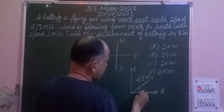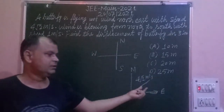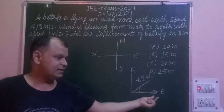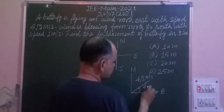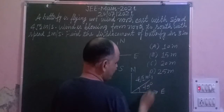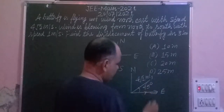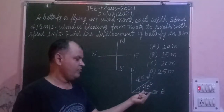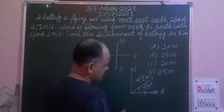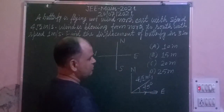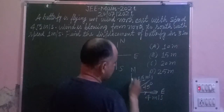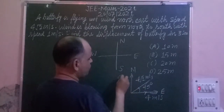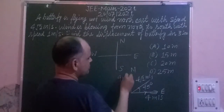You know that the North East direction makes an angle of 45° with each axis. So this angle is 45°. If you find the value of the East component of the velocity of the butterfly, you get 4 meters per second. And also in the North direction, this is 4 meters per second.